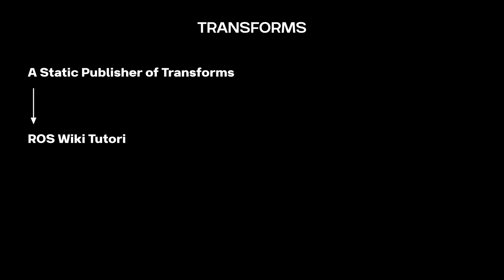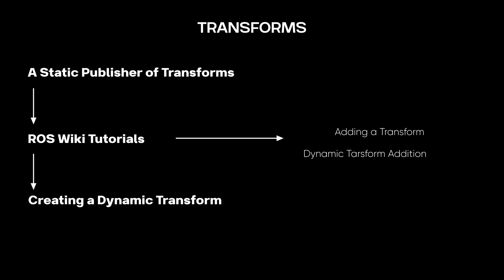Coordinate transforms are a very important thing whenever you are working in three-dimensional spaces. In robotics, specifically in ROS, if we want to define any robot structure — a link from this point to this point — we require transforms. Transforms are really important for kinematic applications and state representation, two common things in robotics. Transforms are especially critical when dealing with swarms, so let's get into it.